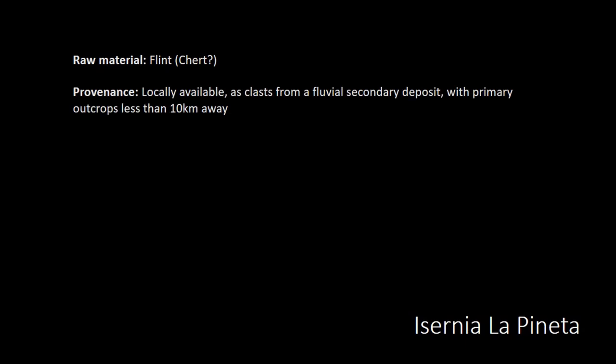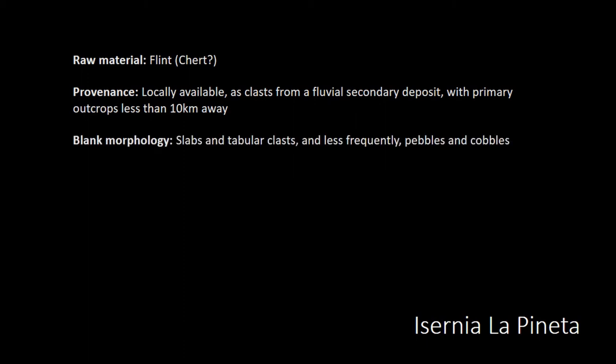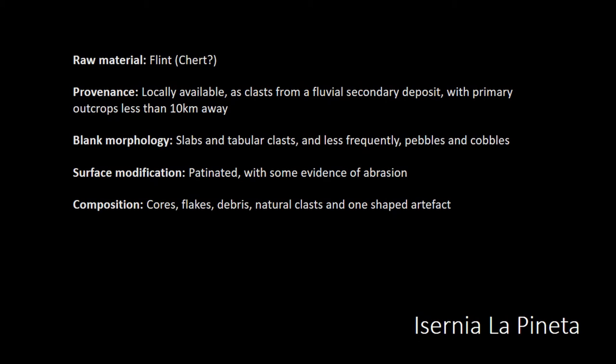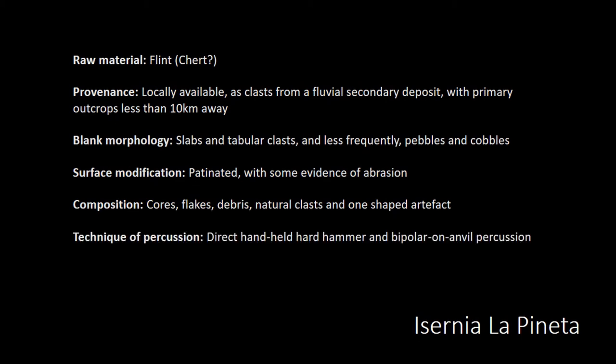Characterizing the nature of the lithic assemblage at Isernia, focusing on the flint material: it's locally available in three phases — aphantic without any microcrystals, microbreciated, and macrobreciated. There is some selection towards aphantic and microbreciated varieties. The blanks are usually tabular slabs because the nature of the cleavage of the raw material ensures that it breaks down in that form. Surfaces are patinated with some evidence of abrasion. The distribution includes coarse flakes, debris, naturoclasts, and one shaped artefact. Two techniques of percussion were noted: direct hard-hammer percussion and bipolar anvil percussion.